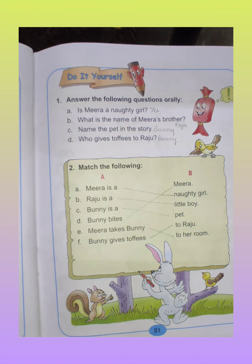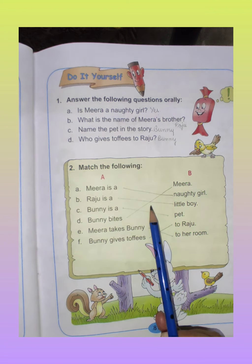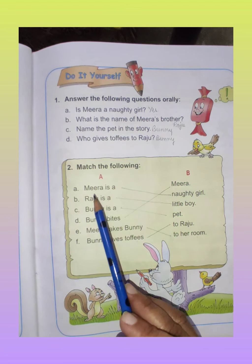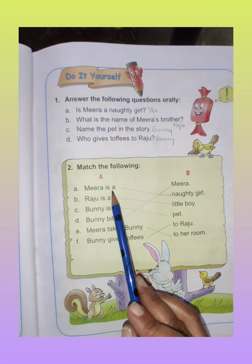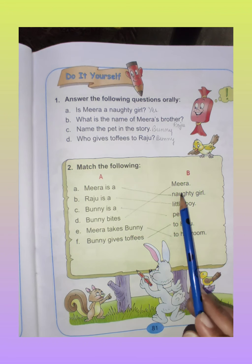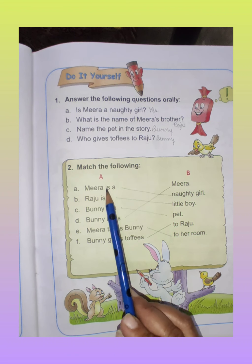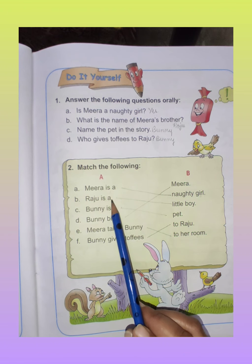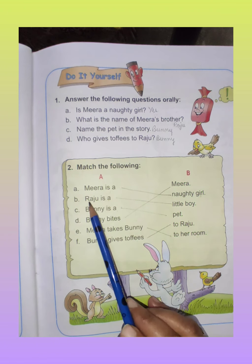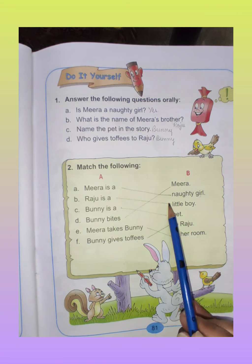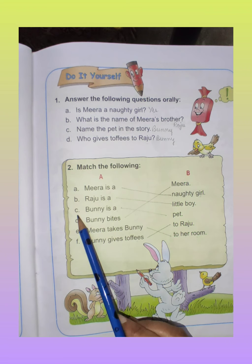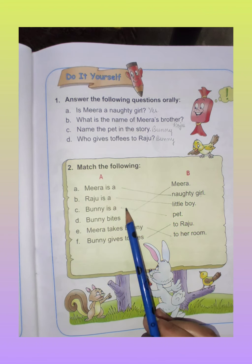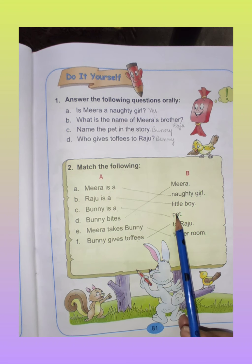Now question number 2 — Match the following. First match these in the book. Part A: Meera is a — match it with 'naughty girl'. So Meera is a naughty girl. Part B: Raju is a — match it with 'little boy'. Raju is a little boy. Part C: Bunny is a — match it with 'pet'. Bunny is a pet.